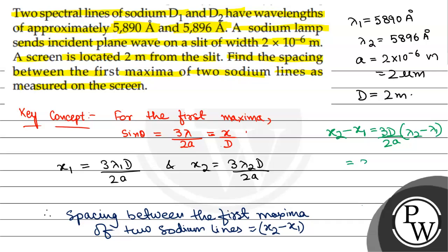Now, D = 2 meters, a = 2×10^-6 meters. And λ₂ - λ₁ = 6 angstroms = 6×10^-10 meters.